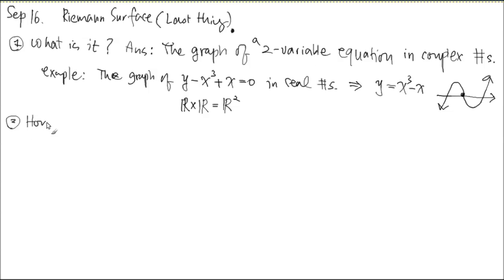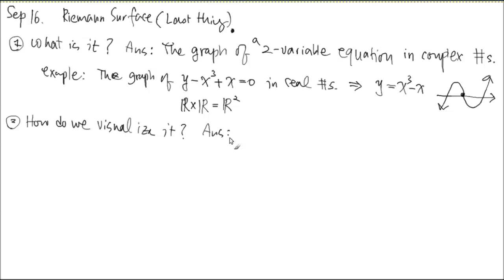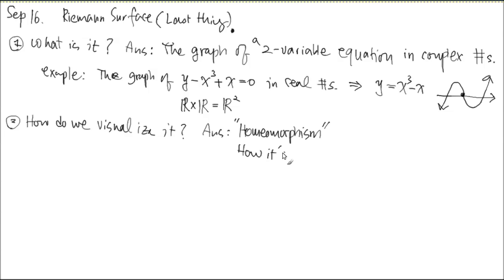Since you can't really visualize a four-dimensional object, you can only define geometry algebraically. One way to visualize is the idea of homeomorphism. Let me use the real example to explain what homeomorphism preserves: it's how things are connected. That's what this really means.